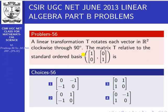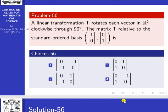The next problem, problem number 56 — very simple. The linear transformation T rotates each vector in R^2 clockwise through 90 degrees. Find the matrix of T relative to the standard ordered basis {(1,0), (0,1)}. Options include matrices: (0,−1;−1,0), (0,1;1,0), and others.